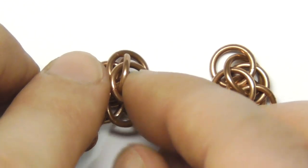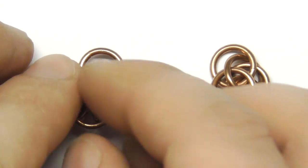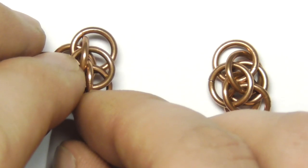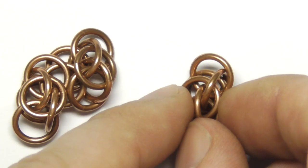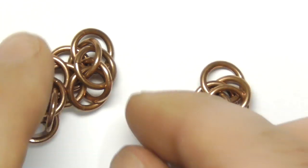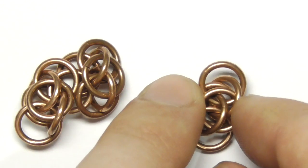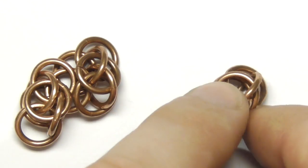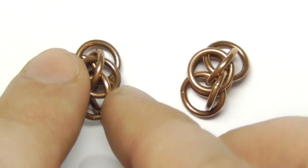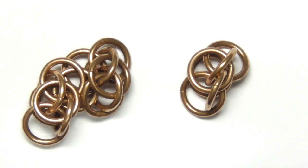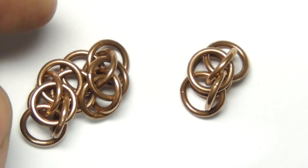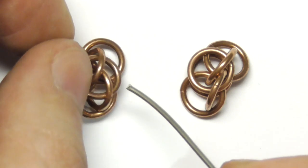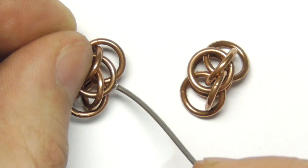First of all let's check the position of these two rings, central this one and this one. Okay and here. Yes that's right. Let's take an open ring and this ring will go through this ring, this ring under these two rings.